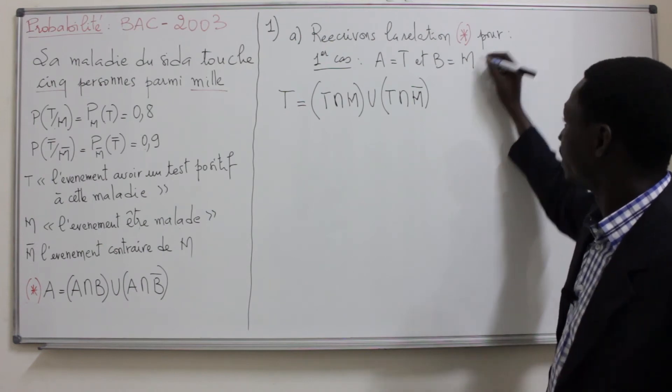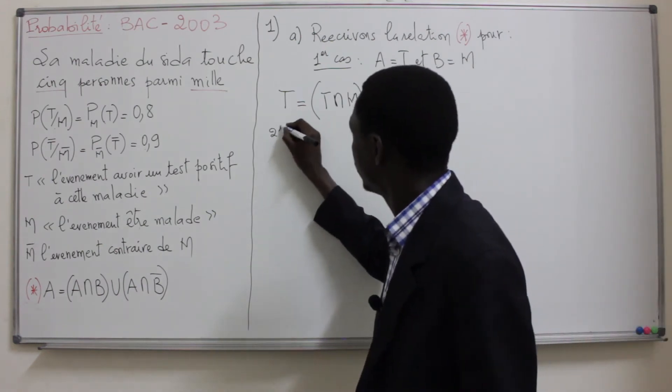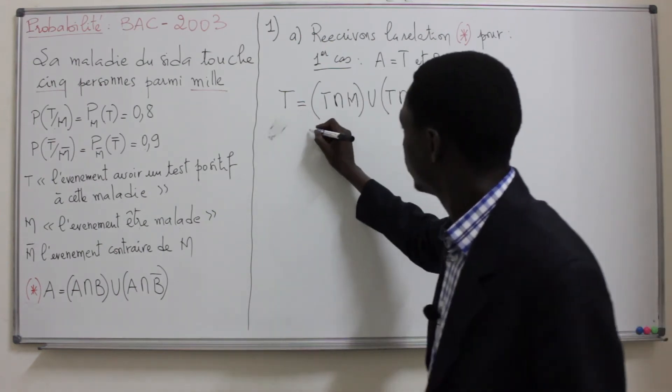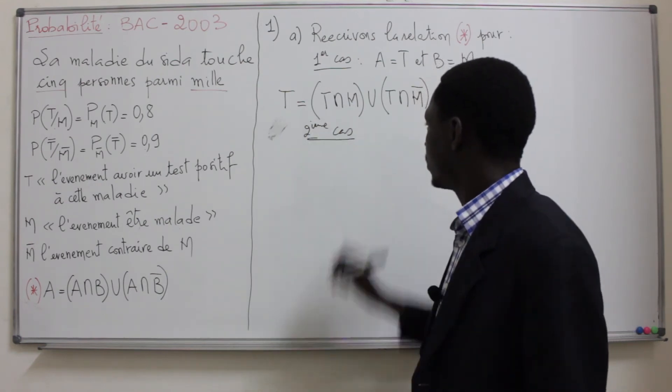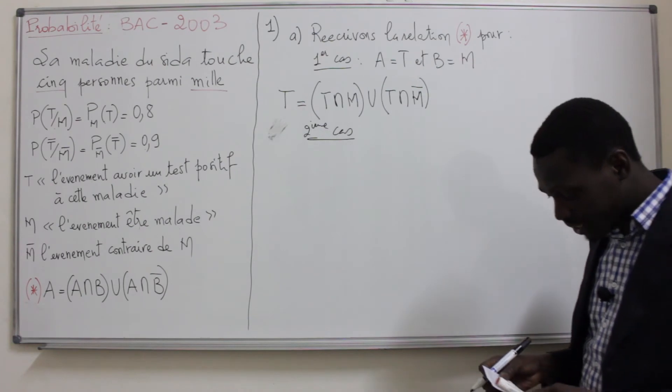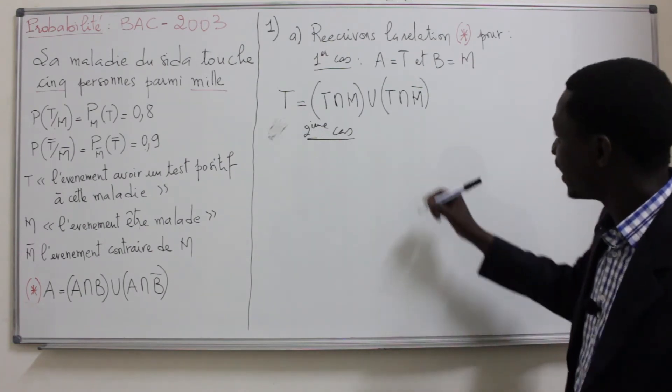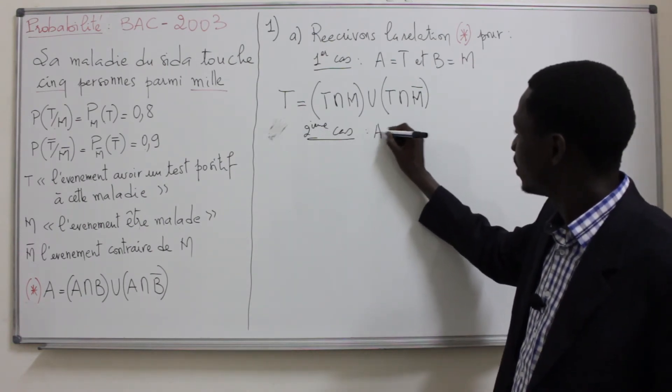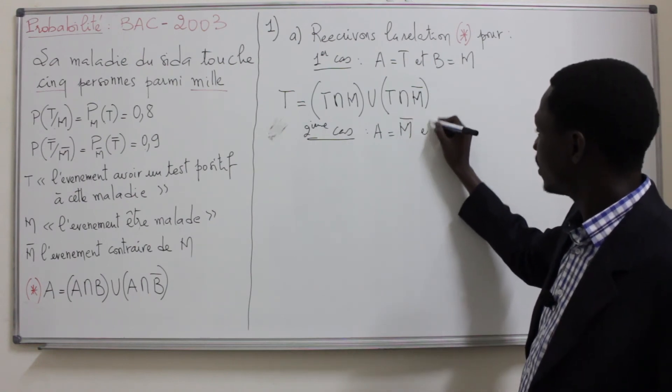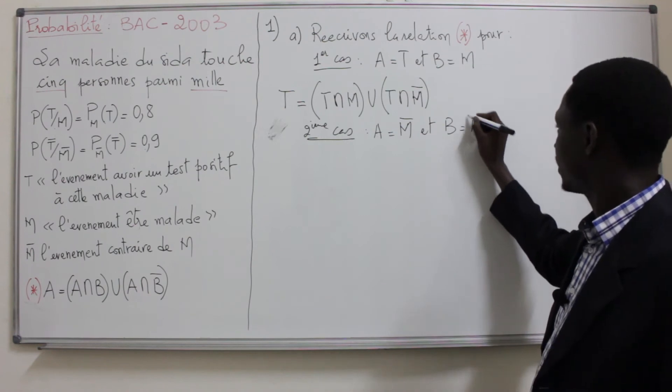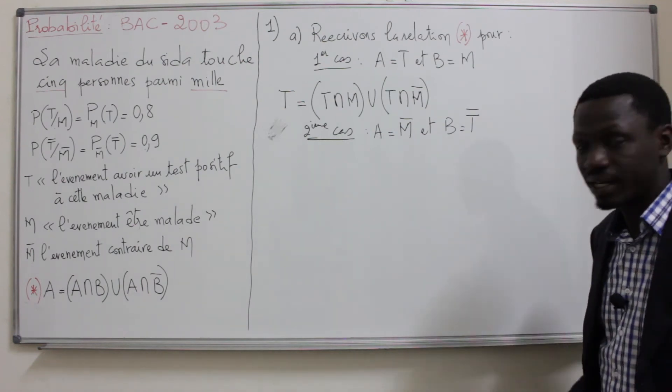Ensuite, pour le deuxième cas. Cette fois-ci, on nous dit de réécrire la relation pour A = M̄ et B = T̄.